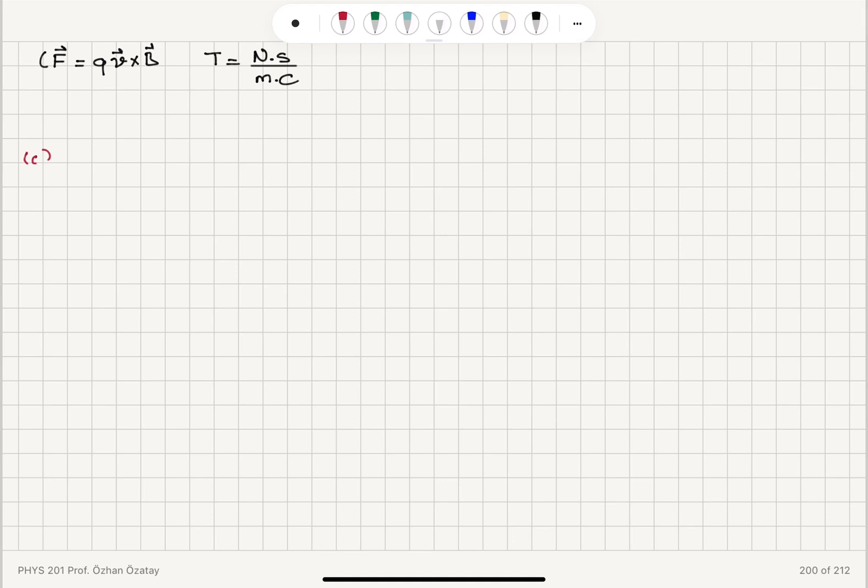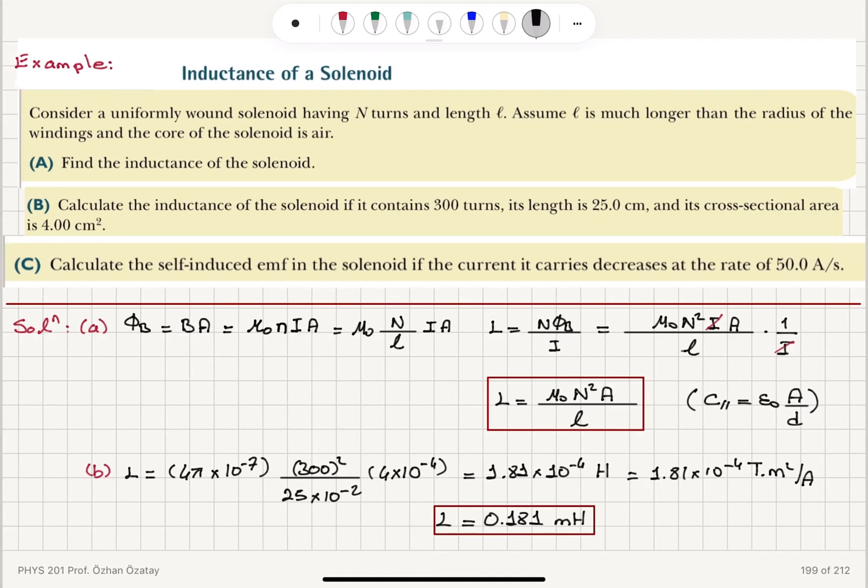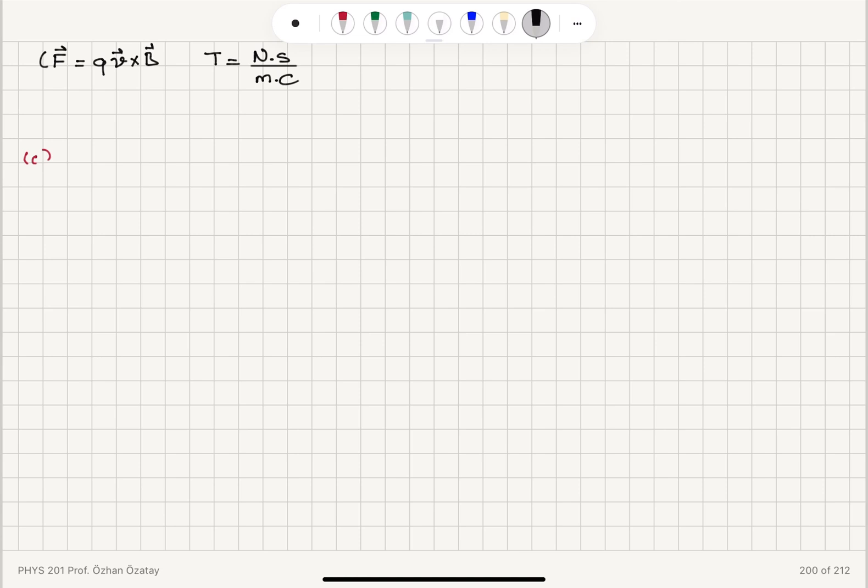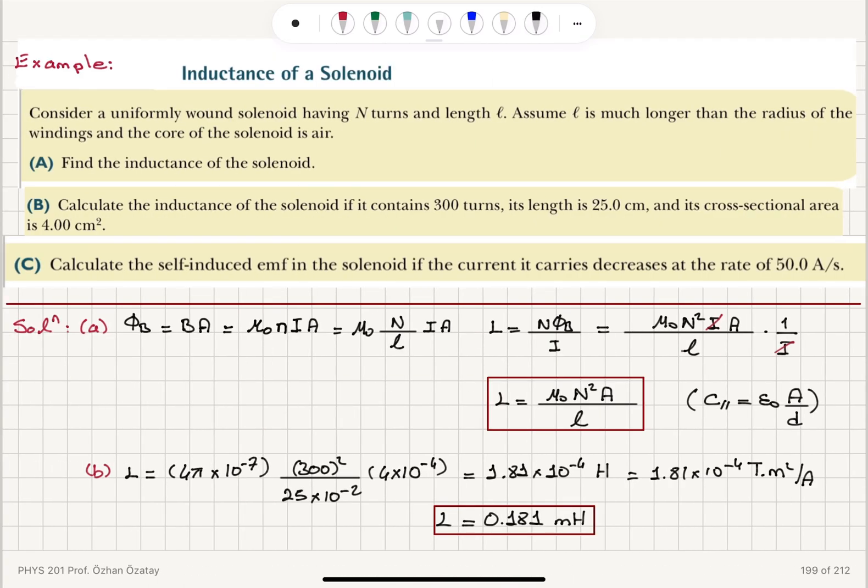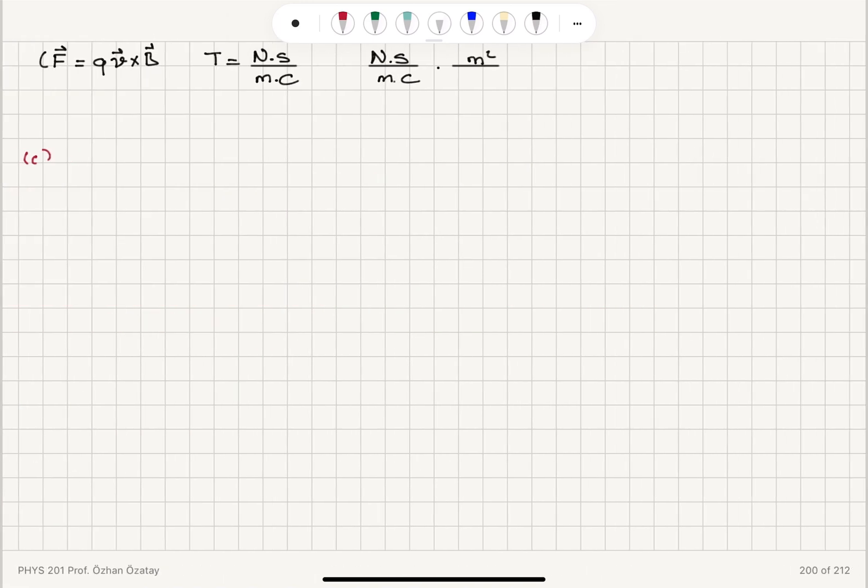And if I multiply this with the area, so Tesla times the area, that is a Newton second divided by meter Coulombs multiplied with the area. Area SI unit is meter squared. And I divide it by the current and phi B over I. So that's per ampere. So this is amperes. We will see that one of these meters will cancel.